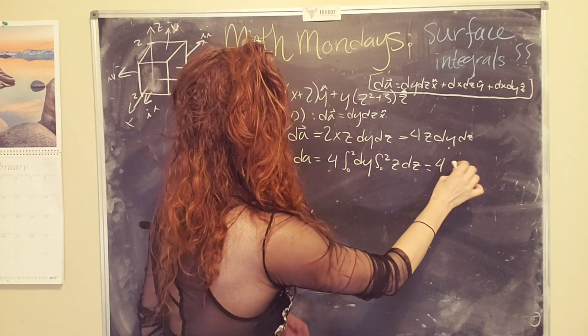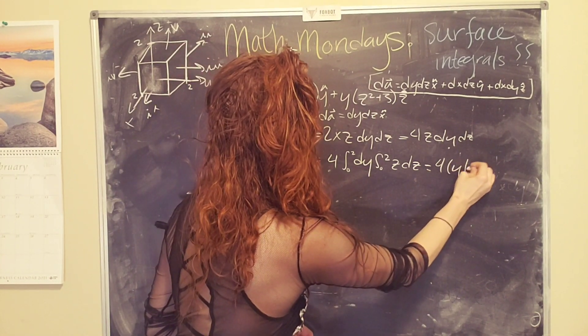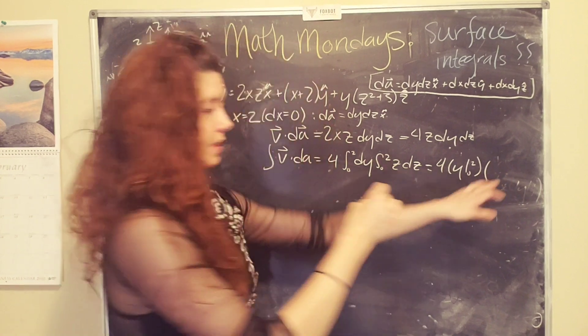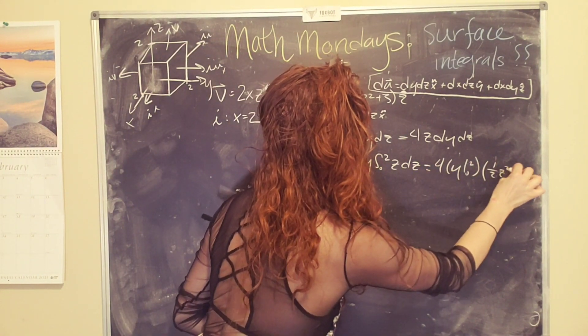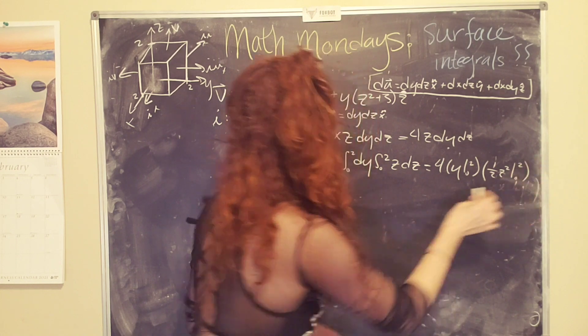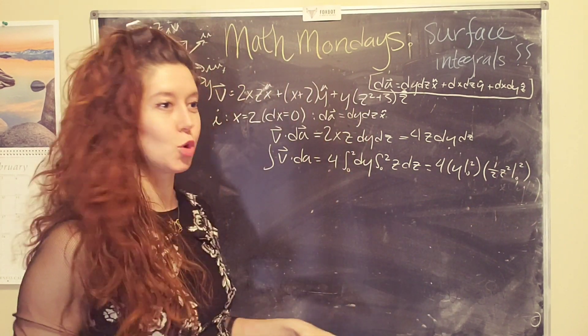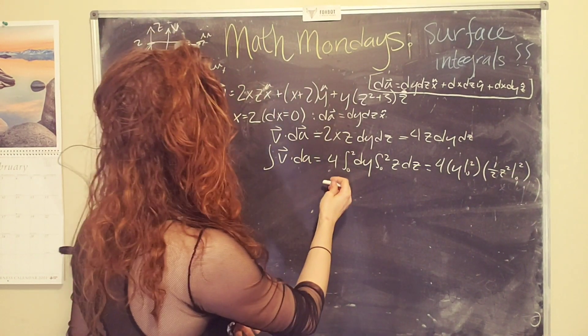So we have a four times a y from zero to two times a one half z squared again from zero to two. Okay. Cool. Cool. I'm going to say boom and cool at the same time. Didn't quite work out. Okay.